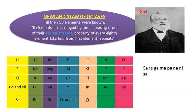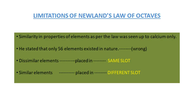The second drawback was that he stated only 56 elements existed in nature. He was wrong, because later on new elements were discovered and their properties did not fit into Newland's Law of Octaves.